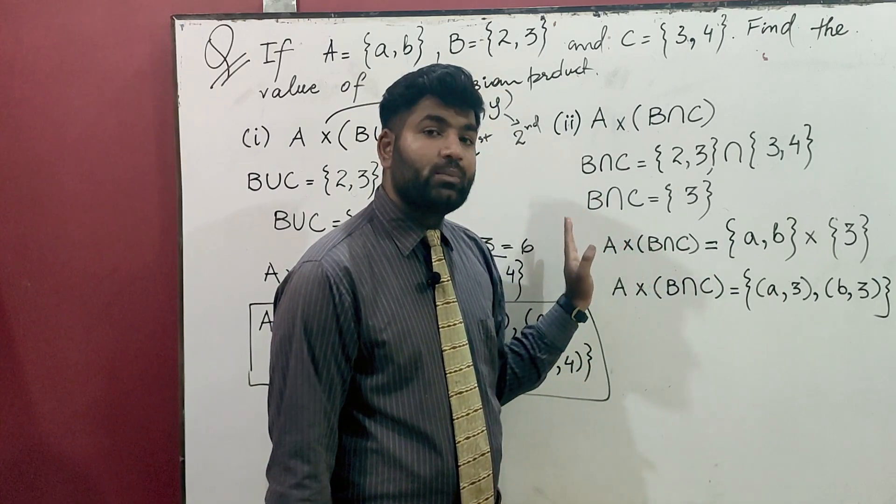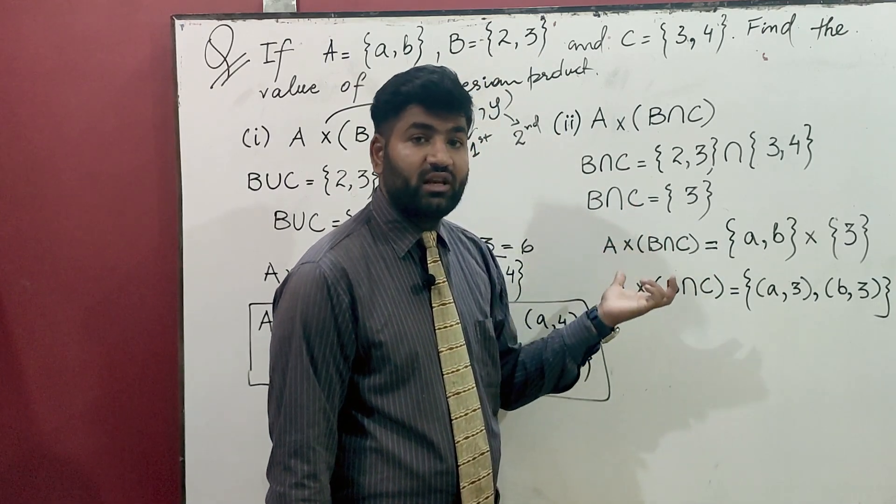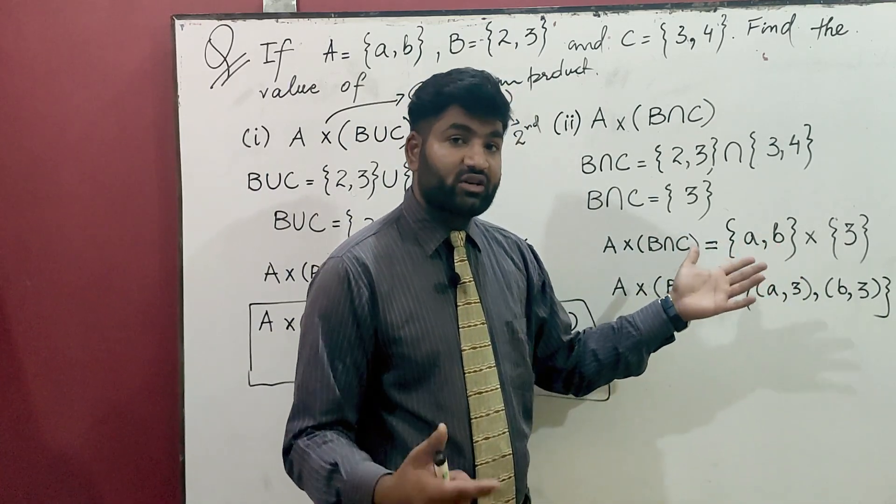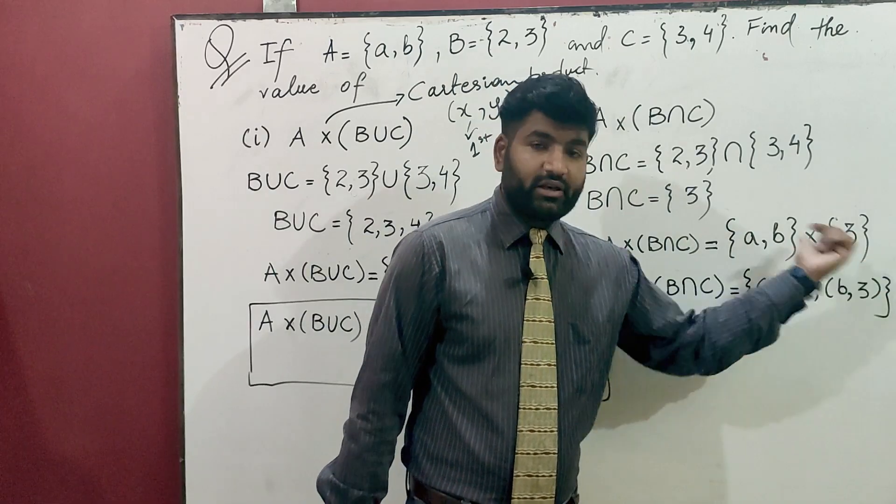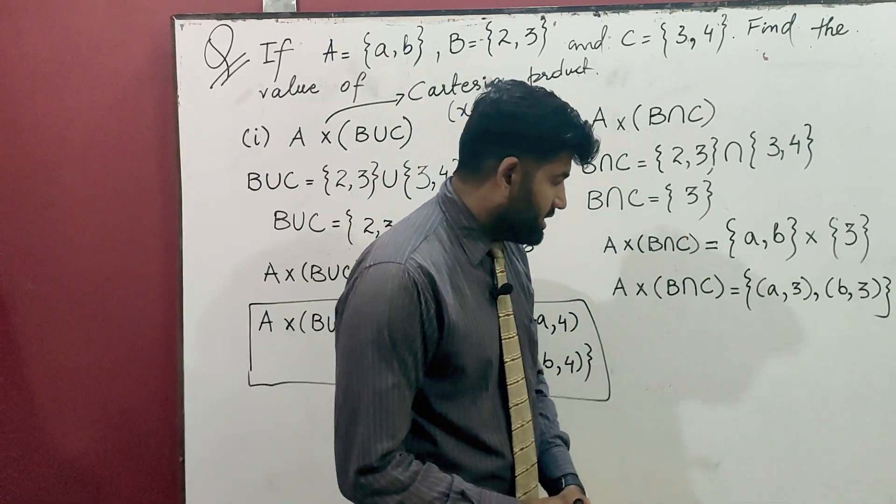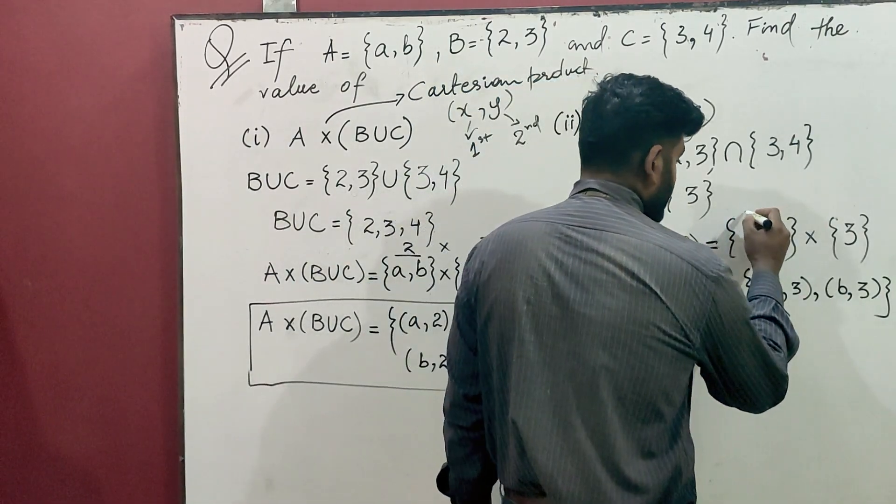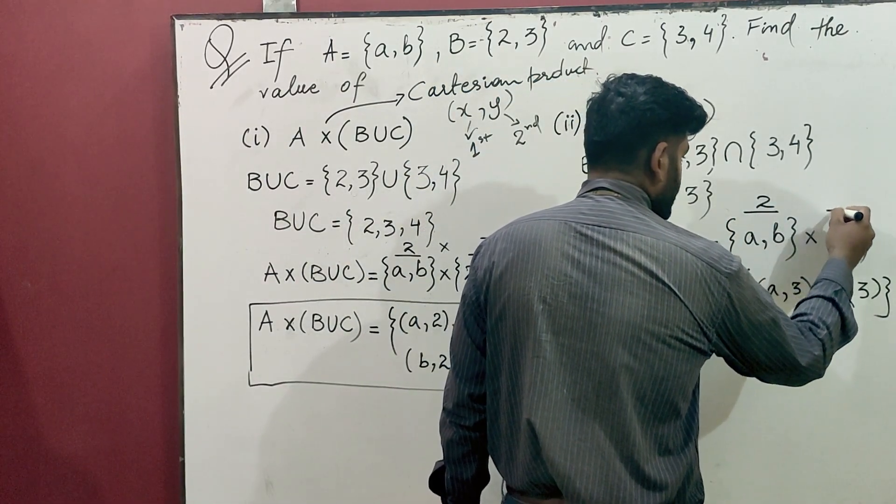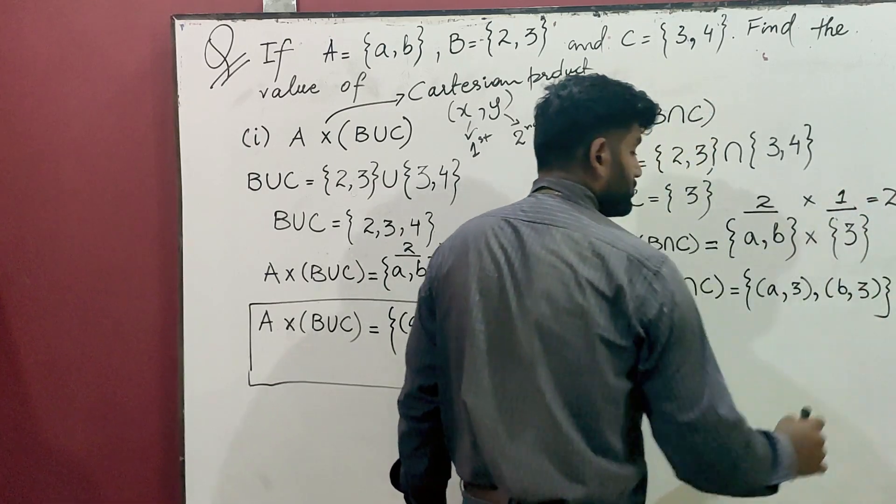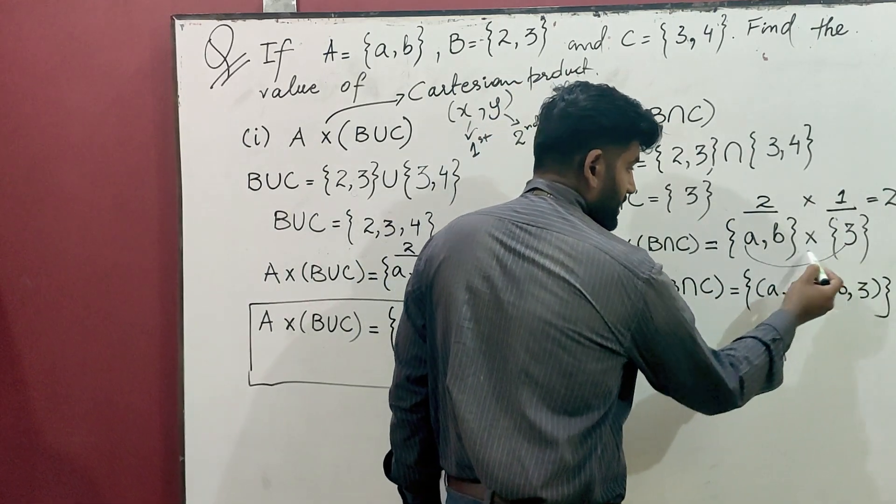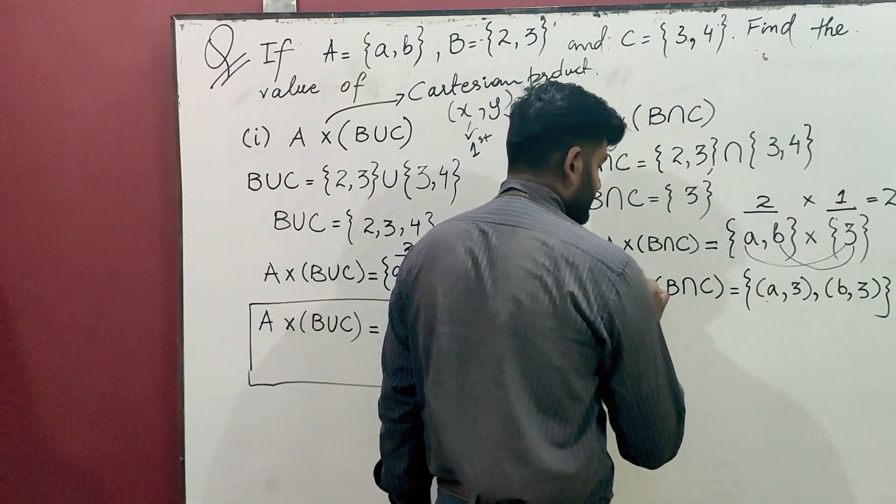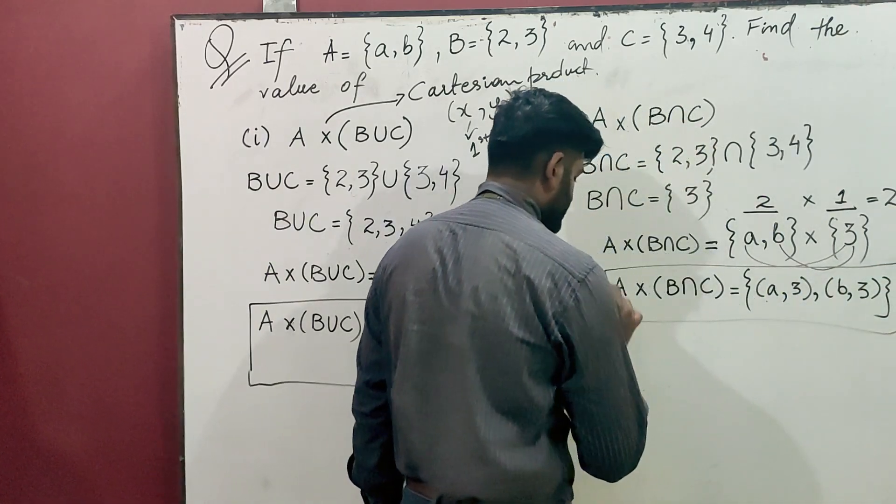Then we have to find out the Cartesian product of A and B intersection C. A is A, B and B intersection C is 3 basically. So now you make their order pairs as we have made them. The order of A is 2 and the order of B intersection C is 1, so 2 multiplied by 1 equals 2. So we will have two order pairs which are A, 3 and B, 3.